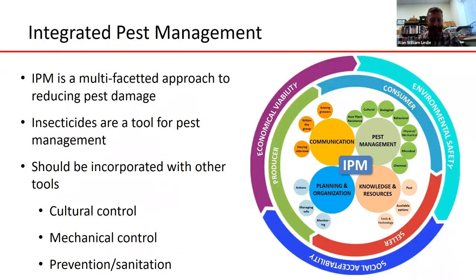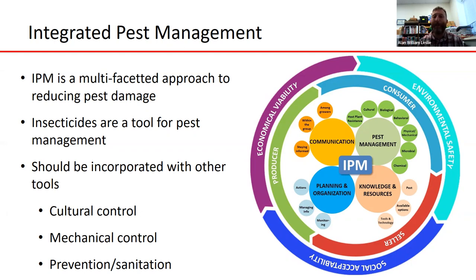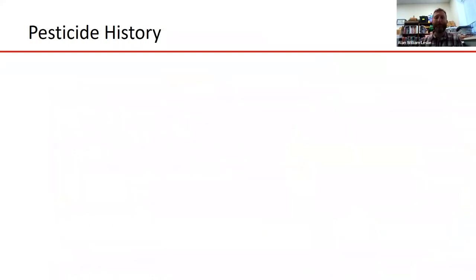Insecticides are not the only way to control insect pests — they're a valuable component of integrated pest management, which is a multi-faceted approach to reducing pest damage. Insecticides should be used in concert with cultural, mechanical, prevention, sanitation, and other control methods to manage insect pests in a holistic way. IPM could be its own presentation, but it's important to understand that insecticides are valuable tools but not the only way to manage pests in agricultural systems.